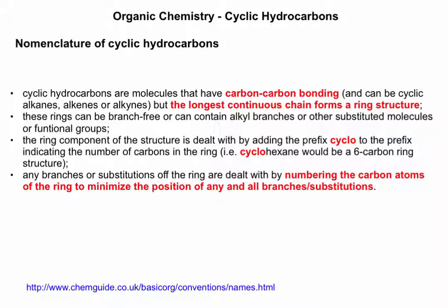These rings can be branch-free or can contain alkyl branches, and as we'll learn later, could actually have other substituted functional groups. The ring component is dealt with by adding the prefix 'cyclo' to an alkane name. So that's shown here by example — cyclohexane, a six-carbon ring structure. Any branches are dealt with by numbering accordingly if necessary, and naming and alphabetization — all that stuff we've looked at previously.